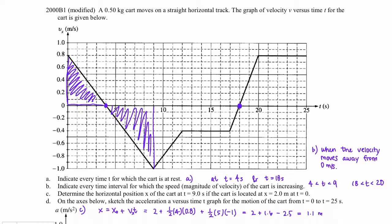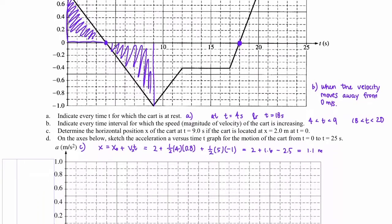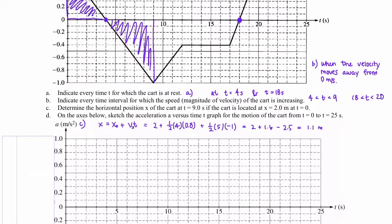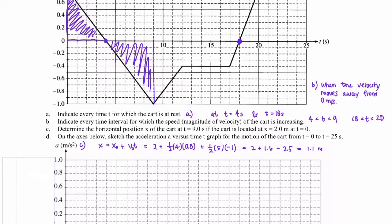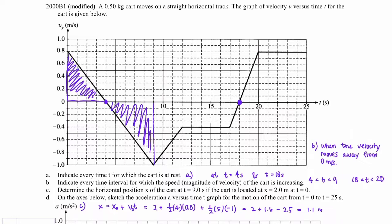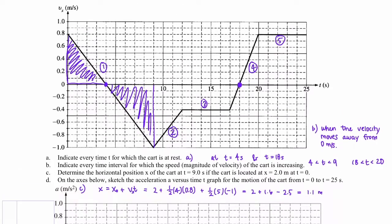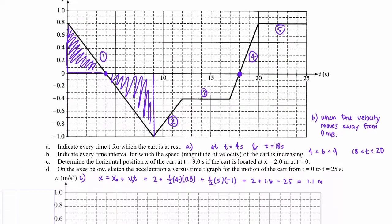Part d: sketch the acceleration a versus time t graph for the motion of the cart from t = 0 to t = 25 seconds. To do this, acceleration is represented by the slope of the velocity versus time graph. It looks like we have about 5 segments with different slope values. I'll label these segments 1, 2, 3, 4, and 5, and then find the accelerations — the slopes — for each of those segments.